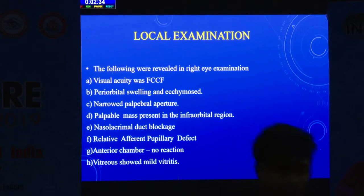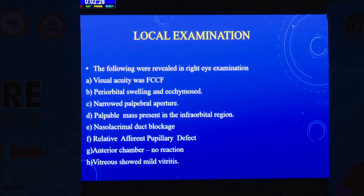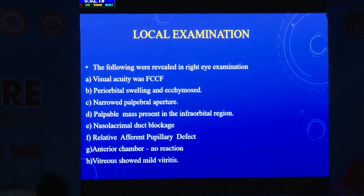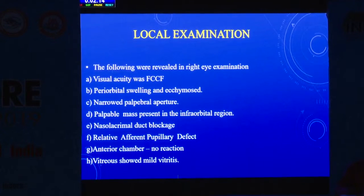On local examination, the visual acuity was finger counting close to face. Periorbital swelling and ecchymosis were present, with a narrowed palpebral aperture. A palpable mass was present in the infraorbital region. The nasolacrimal duct was blocked. There was RAPD present, and the anterior chamber showed no reaction but there was mild vitreitis.